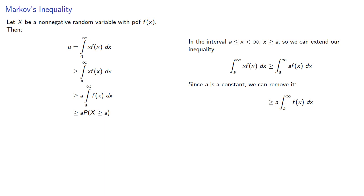So we have this inequality that involves μ. And if we divide both sides by a, we find that μ divided by a is greater than or equal to the probability that X is greater than or equal to a. And this gives us Markov's inequality.